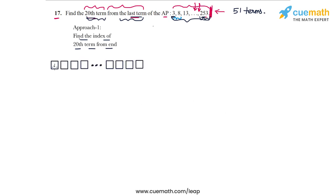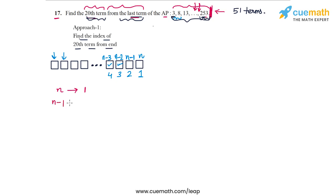Imagine the AP as a series of boxes — each box represents a term. The last box is the Nth term, which is the 1st term from the end. The (N−1)th box from the beginning is the 2nd term from the end. The (N−2)th box from the beginning is the 3rd term from the end, and the (N−3)th is the 4th term from the end, and so on.